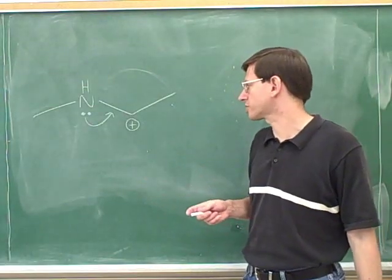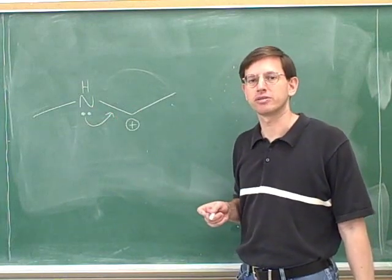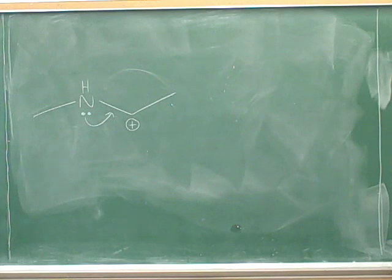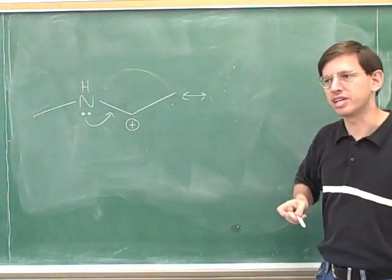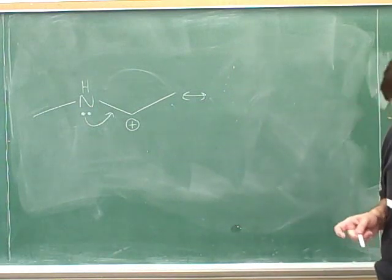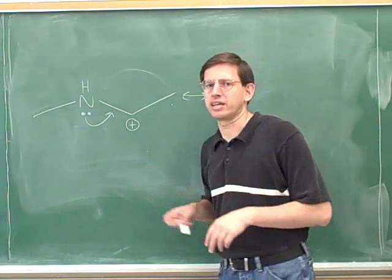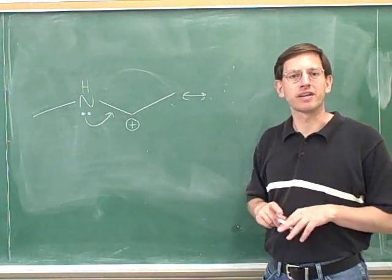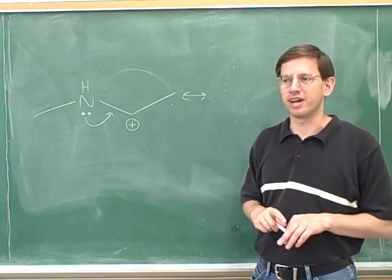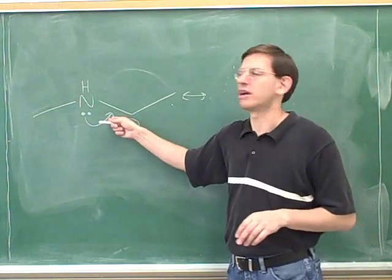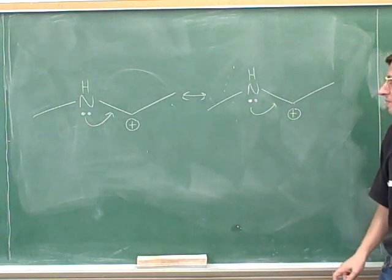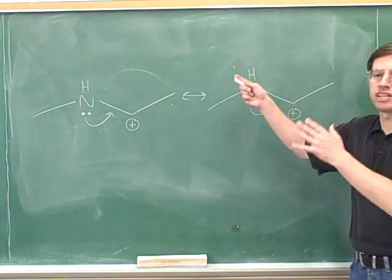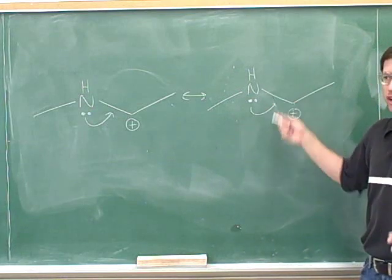Try drawing the resonance structure that follows from this electron-pushing arrow. Now let's go through that together. We use a double-headed arrow to indicate we're drawing another resonance structure. I'm going to introduce a really useful technique: the redraw-and-modify technique. First, we simply redraw the original picture without making any changes — this is just our starting point, not the correct resonance structure yet.